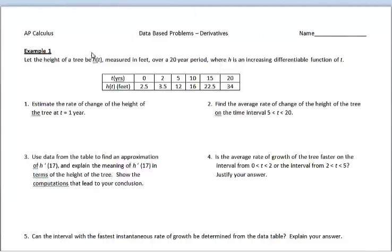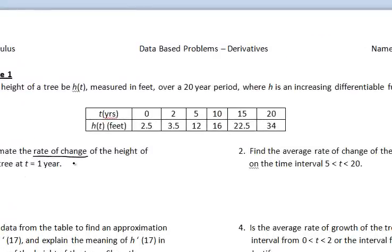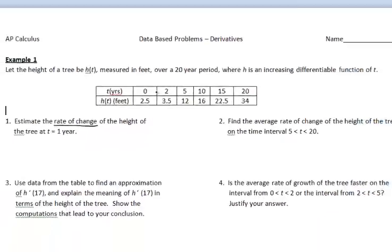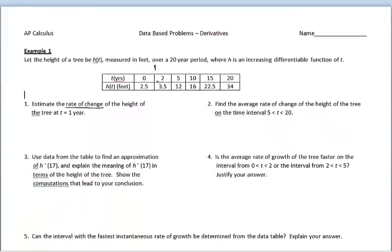This is data-based problems, derivatives, example 1. Let the height of a tree be h(t), measured in feet over a 20-year period, where h is an increasing differentiable function of t. Time is given in years, and we have data collected from year 0 up to year 20 showing various heights. The question asks us to estimate the rate of change of the height of the tree at t = 1 year. We don't have an equation, so all we can do is estimate. Let's find where t = 1 falls — it's between 0 and 2 years.